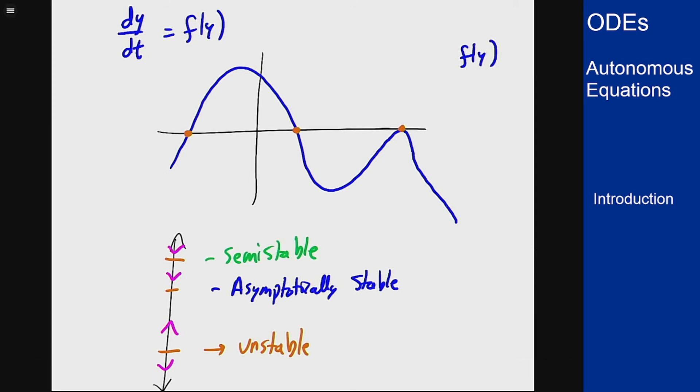So the graph going from below to above at the equilibrium solution makes it unstable, because it's negative below so it's going away, positive above so it's also going away, so that's unstable. Going above to below makes it asymptotically stable, and touching the axis and going away on either side will make it semi-stable.